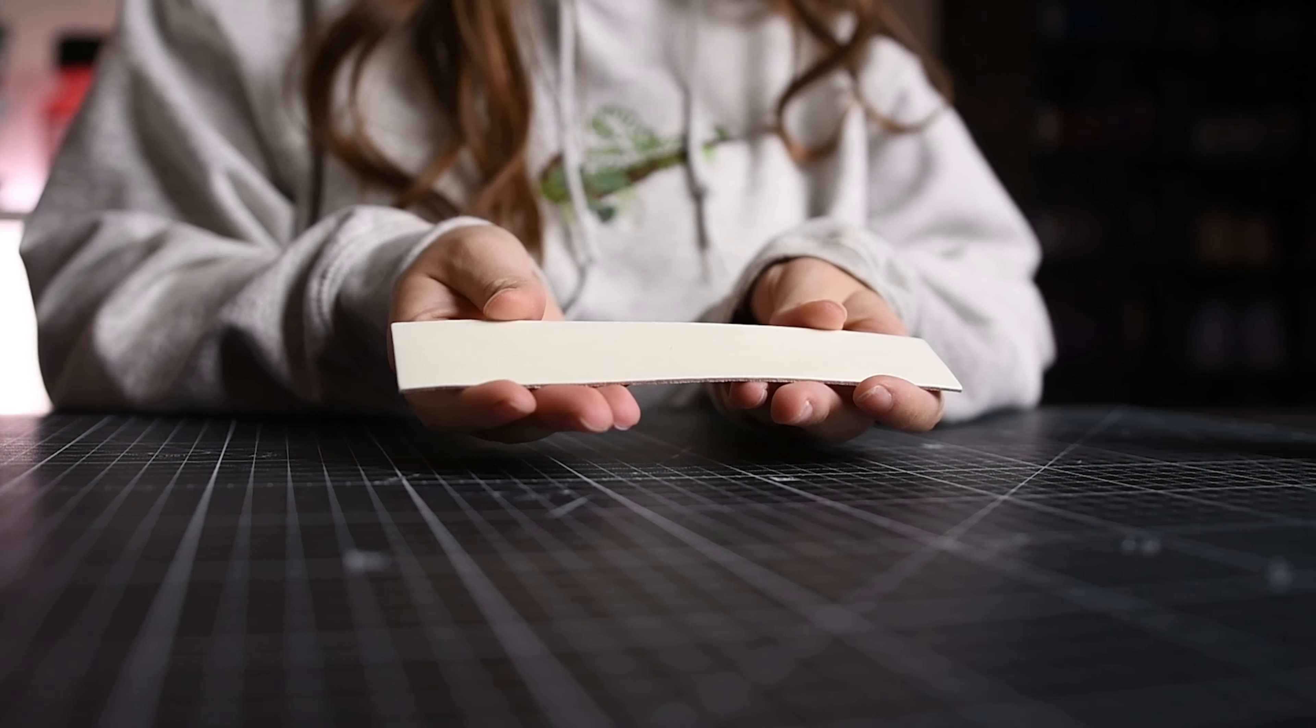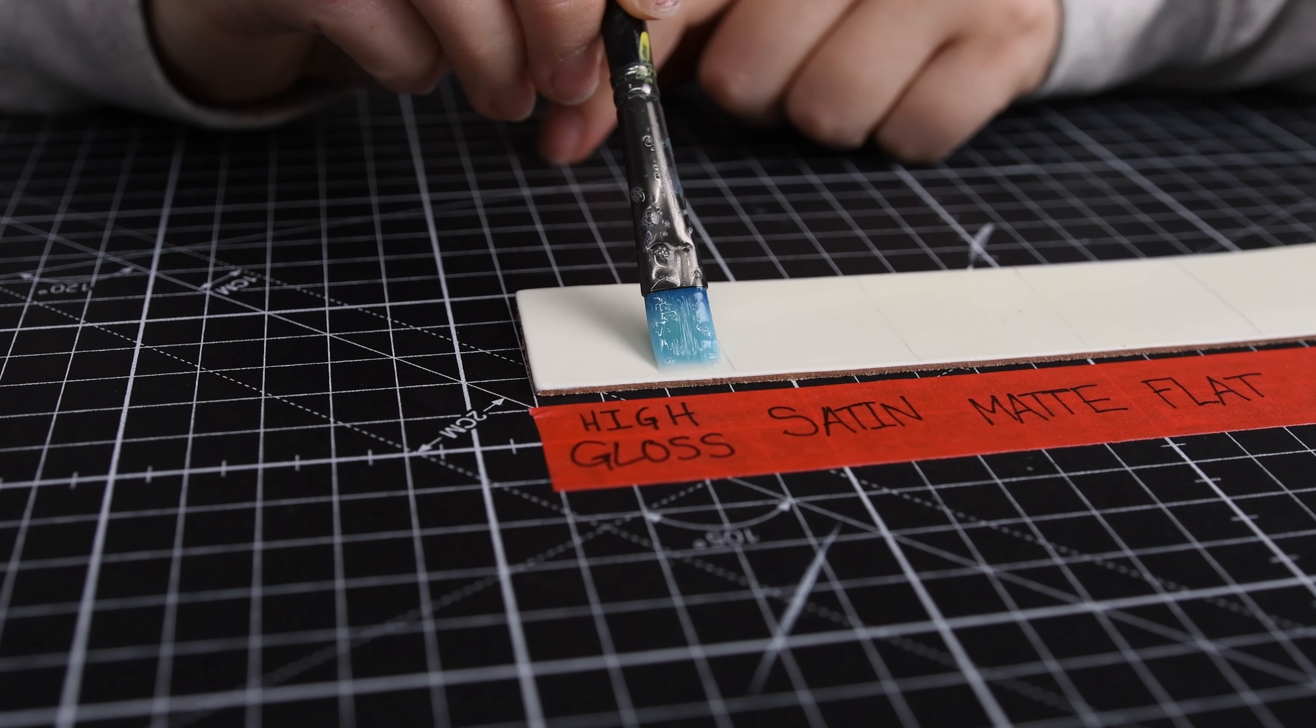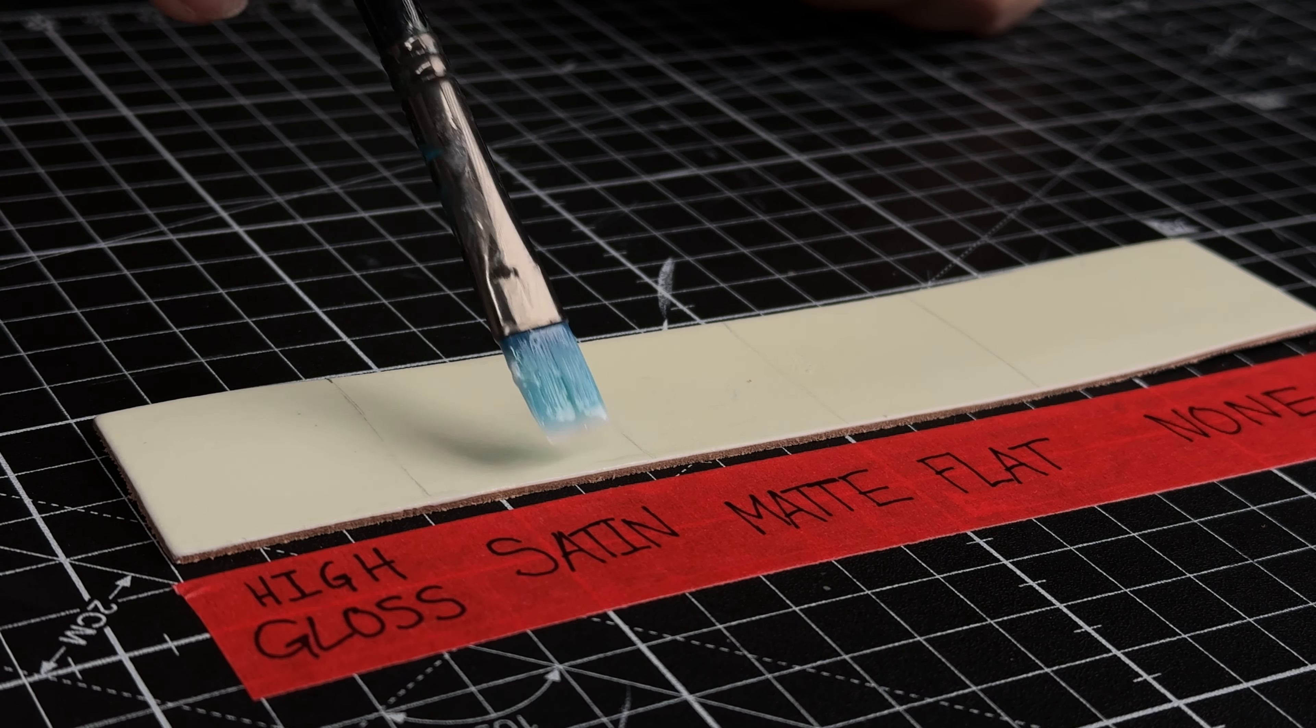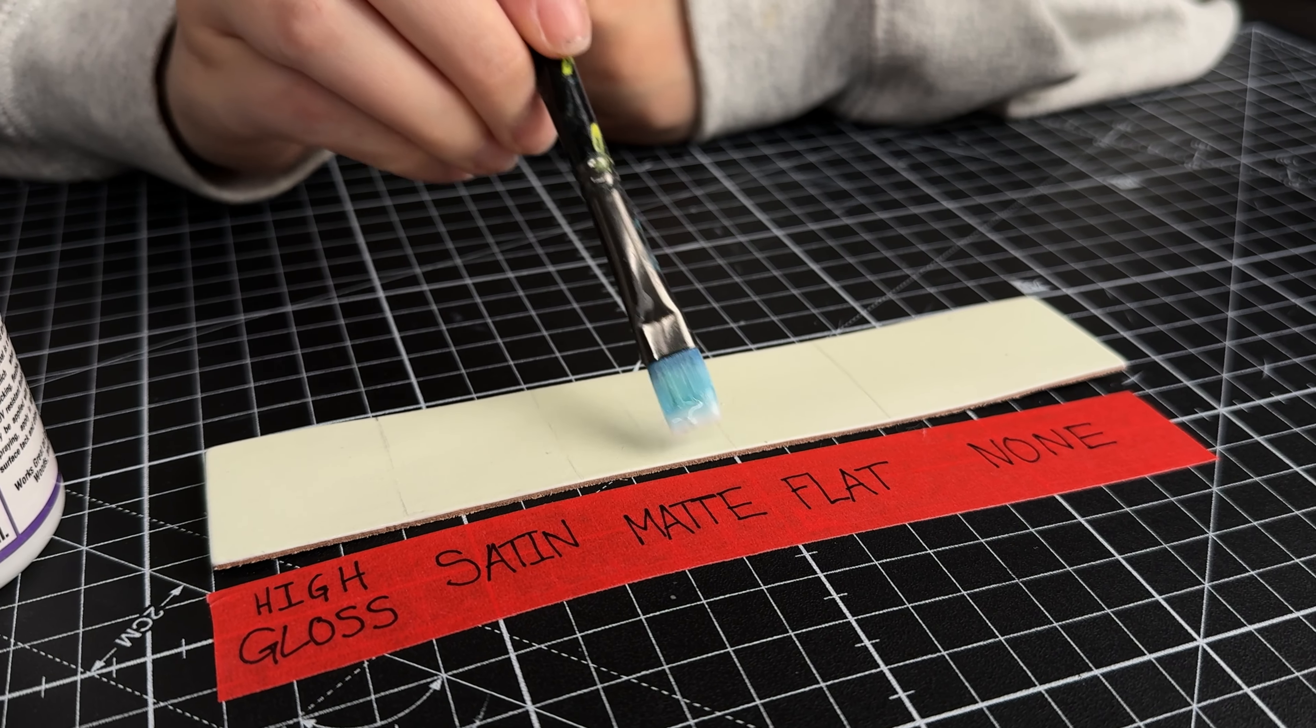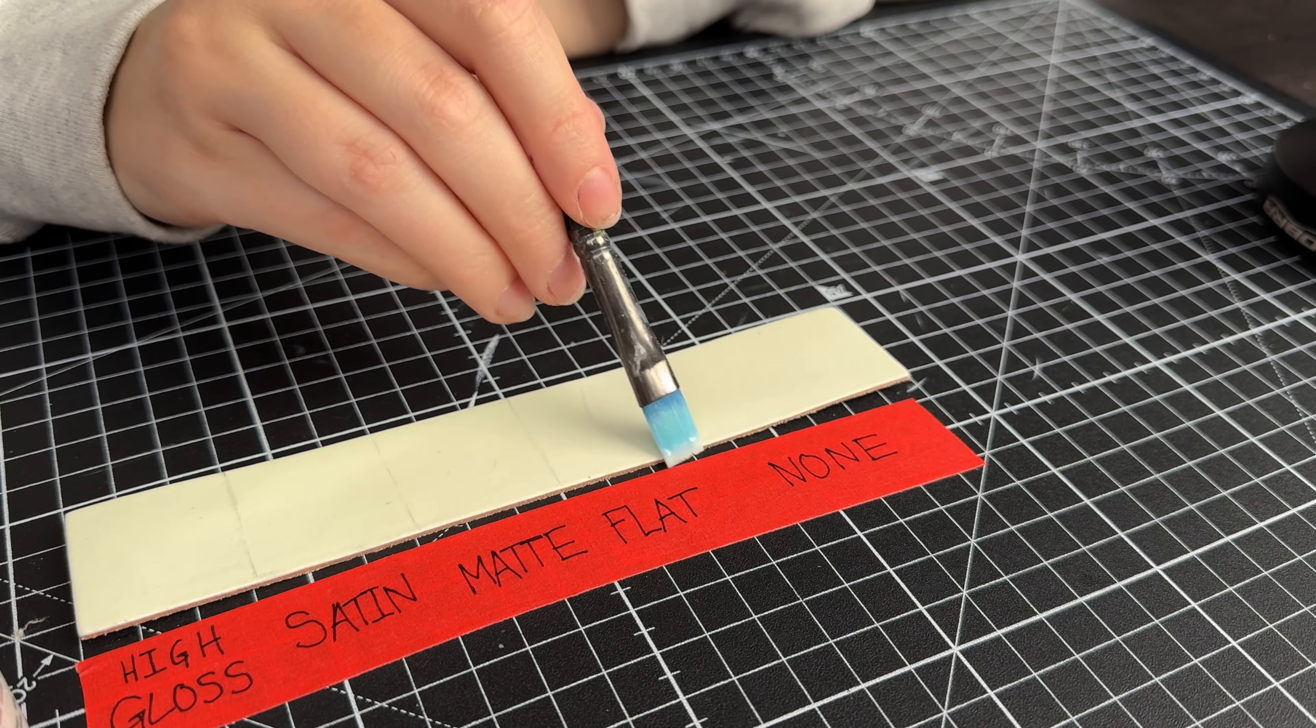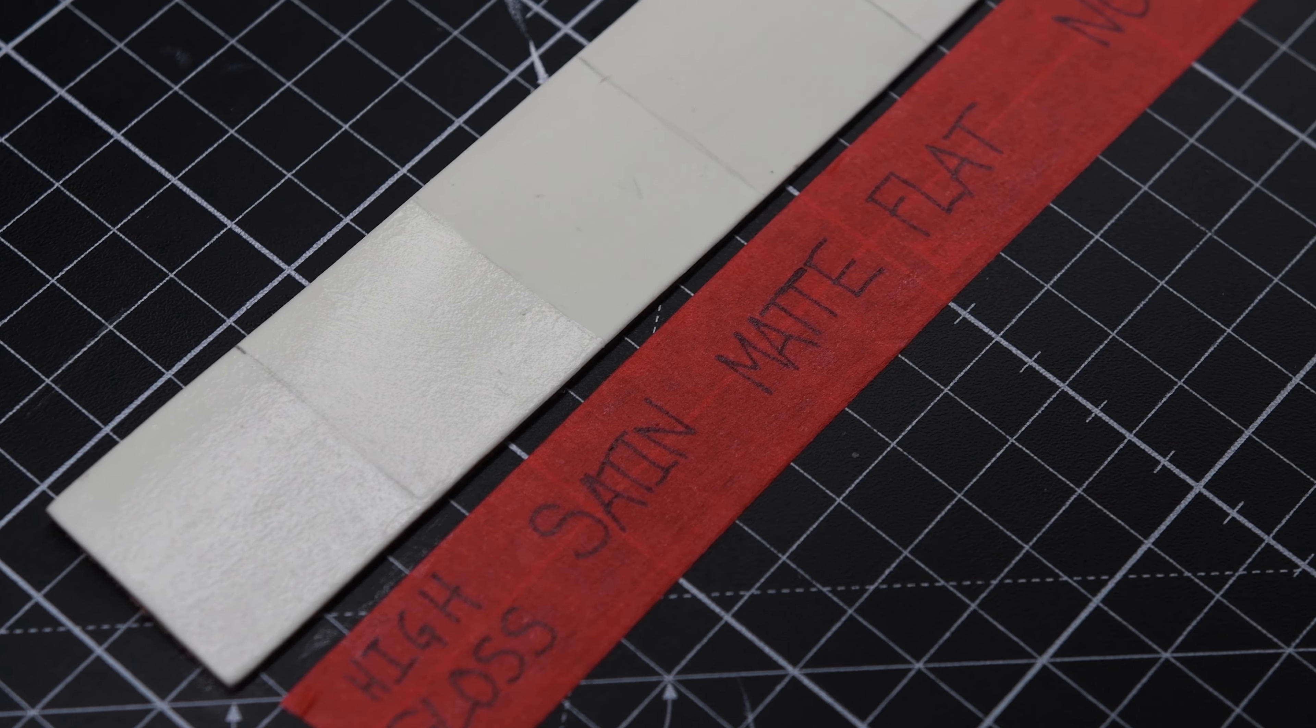Now that the leather swatch is airbrushed, I'm going to apply each of the Angelus four coat finishers on top of the paint and leave one without any finisher, and then compare how they look in the light and in the dark. Overall, none of the finishers affect the glow in the dark feature, so you can use whichever you want based on how you want the shoe to look in the daylight.